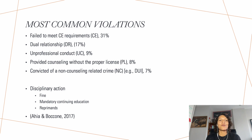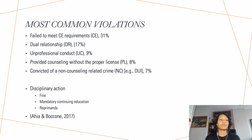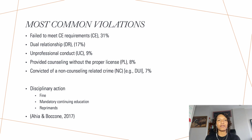I wanted to cover the most common violations because I remember being a grad student thinking, there are all these ethical dilemmas, I'm going to lose my license before I even get it. But most common violations, based on 2017 research, are situations you should be able to avoid if you just practice aspirational ethics and try to be the best you can be. For example, failing to meet CE requirements — most states, every state I believe, has CE requirements. In the state I'm licensed in, every two years I have to submit 30 continuing education credits to show I've continued to be a lifelong learner. It's really easy to get to 30 over the course of two years.